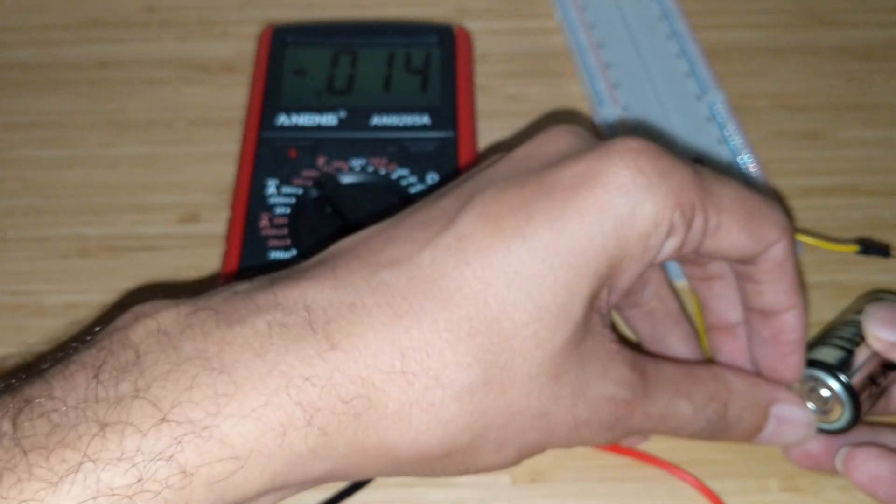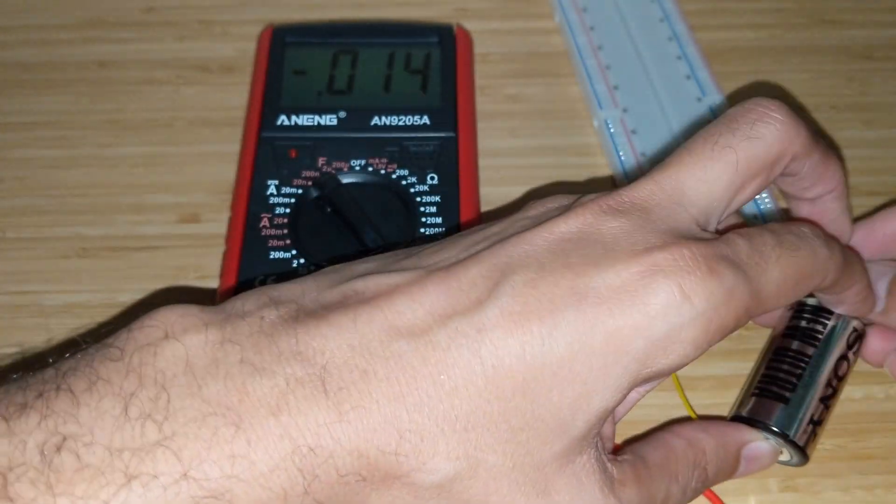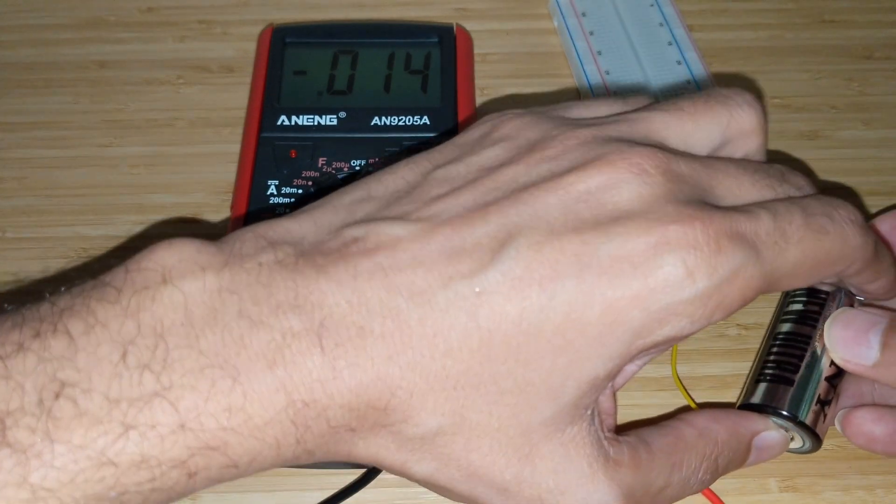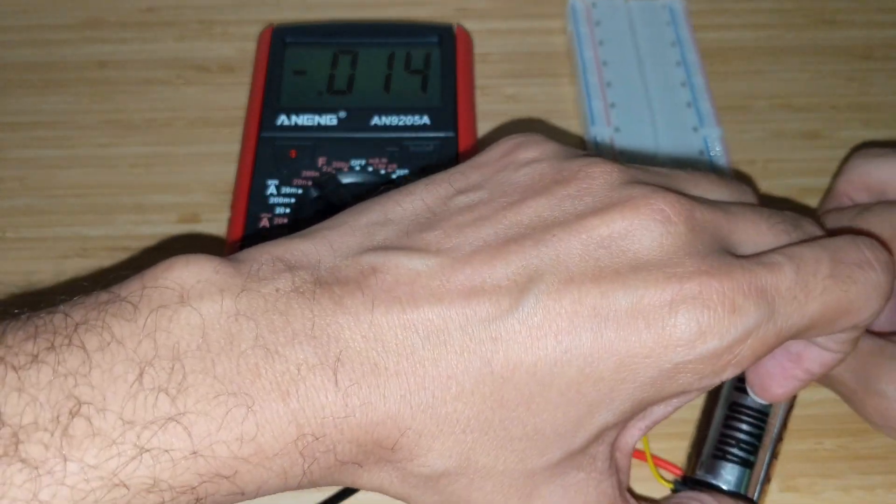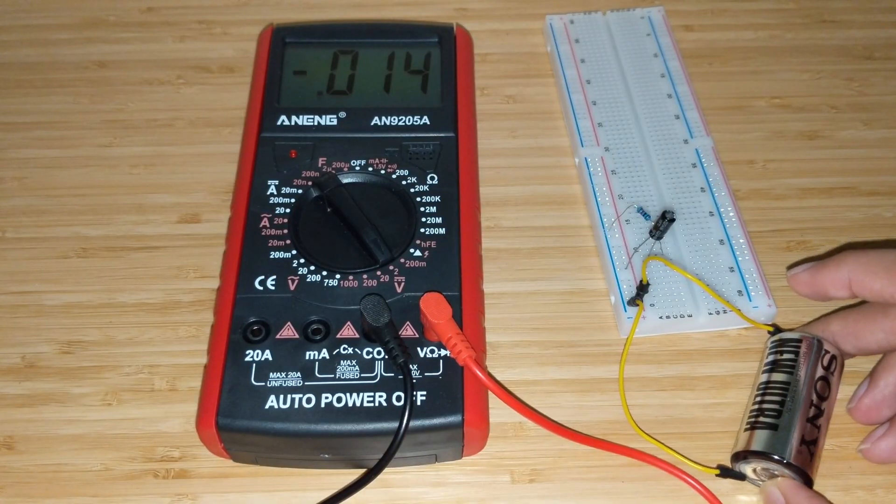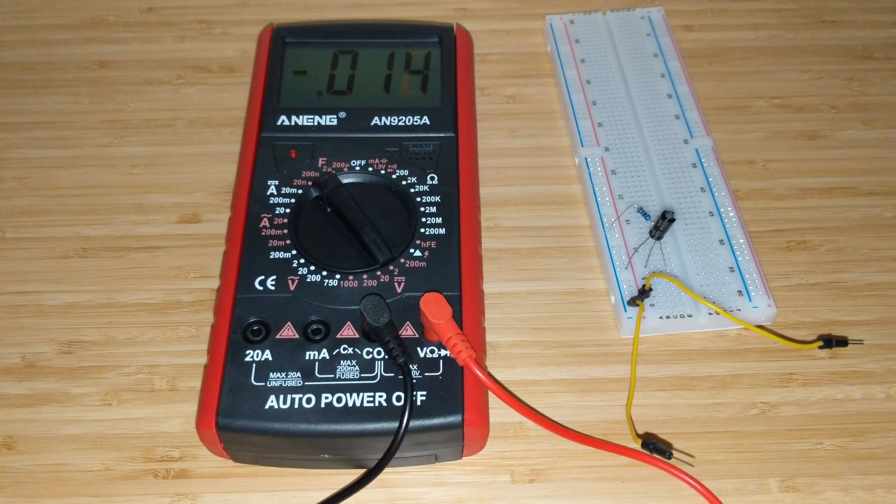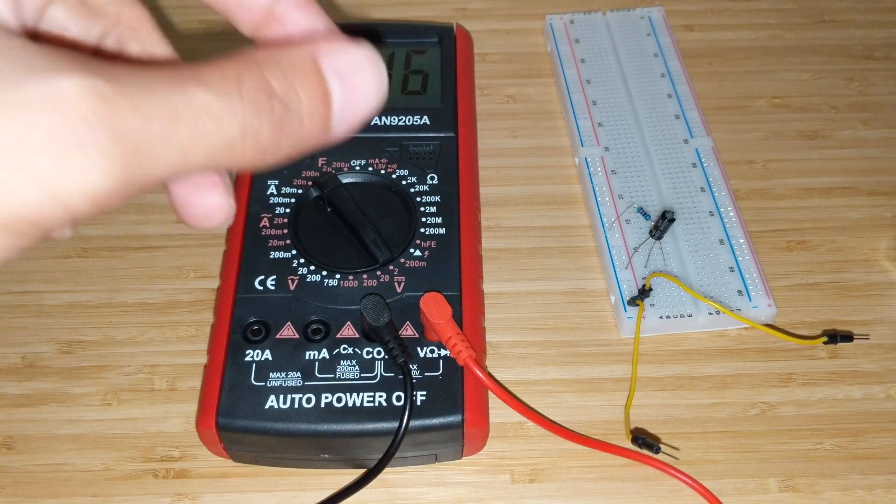And again, many of you would already know what this is going to show, but right now the capacitor is discharged so it should show roughly zero volts. Let's do this. Let's take this battery here and let's charge the capacitor through the resistor.